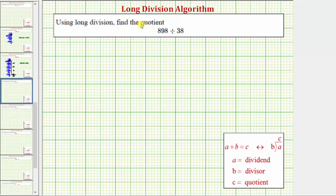We want to use long division to find the quotient. We have a three-digit number divided by a two-digit number. The first step is to write the quotient in long division form, which is this form here. So we have 898 divided by 38.